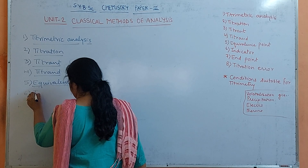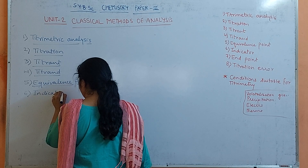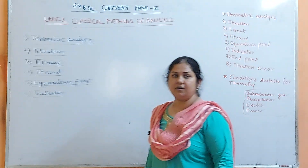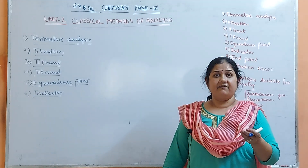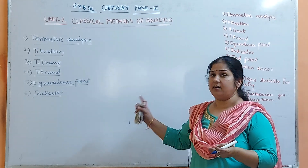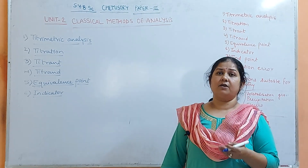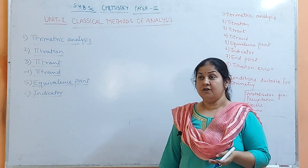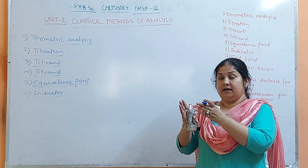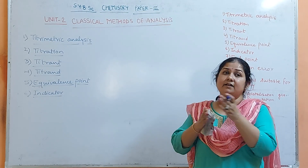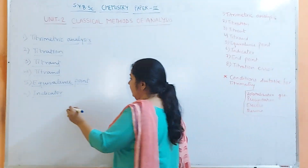Next is Indicator. To judge the completion of reaction, we require some reagent — an organic reagent — to say whether the reaction is complete or not; that is called as an Indicator. An indicator can be of various types, like an adsorption indicator or a visible indicator, which is a color change indicator. This indicator should change its color from when reactants are present to when products are formed — a visible change should be there.